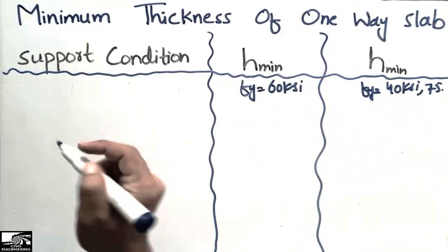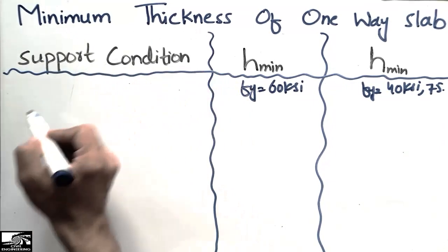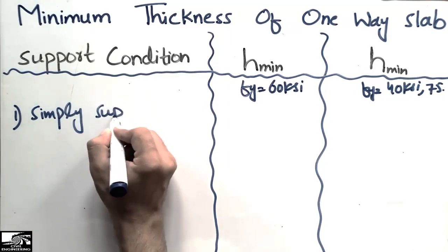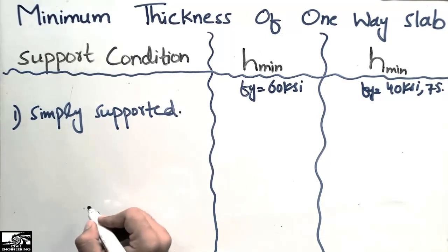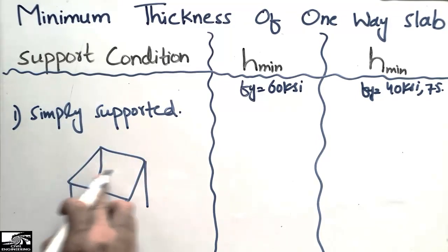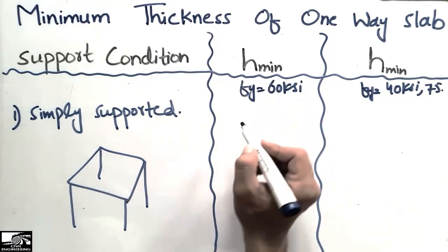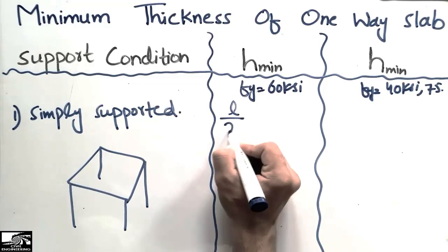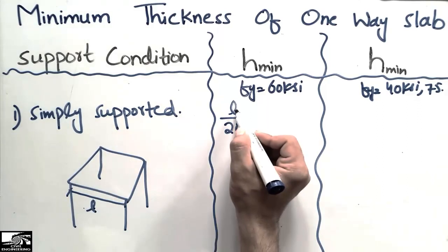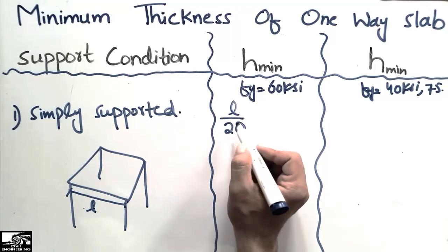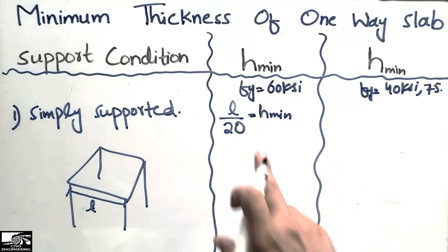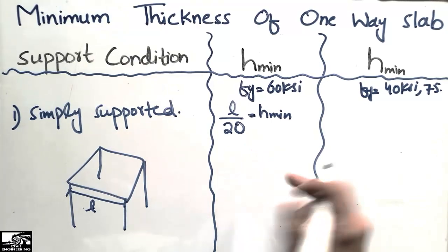The first support condition is the simply supported slab. The simply supported slab is the type of slab which is supported on both sides. The minimum thickness of this type of slab is l/20, where l is the length of the slab. Dividing l by 20 gives us the required minimum thickness of the slab.